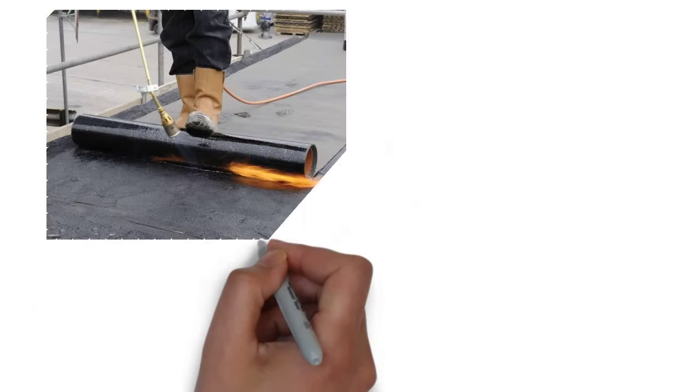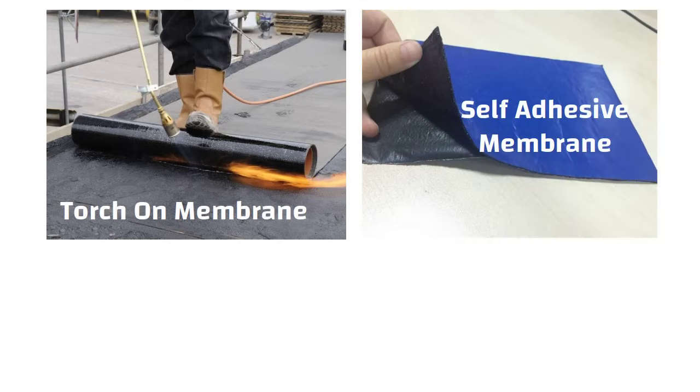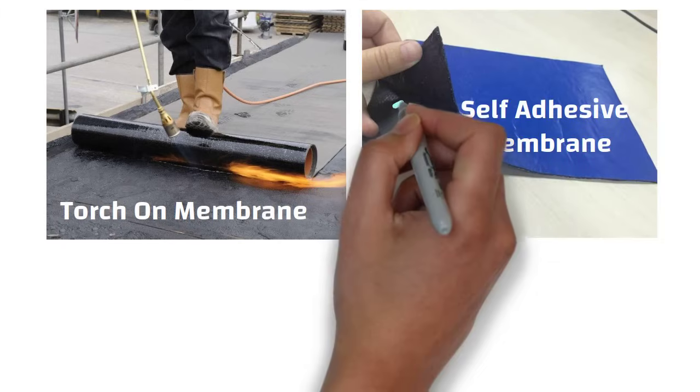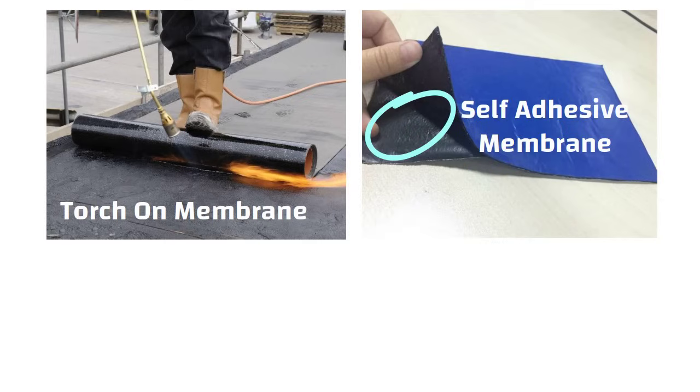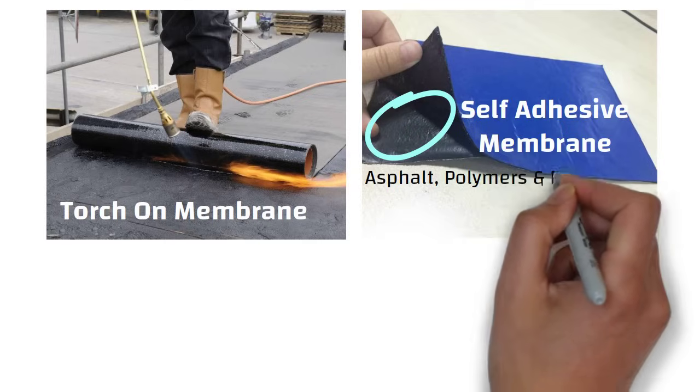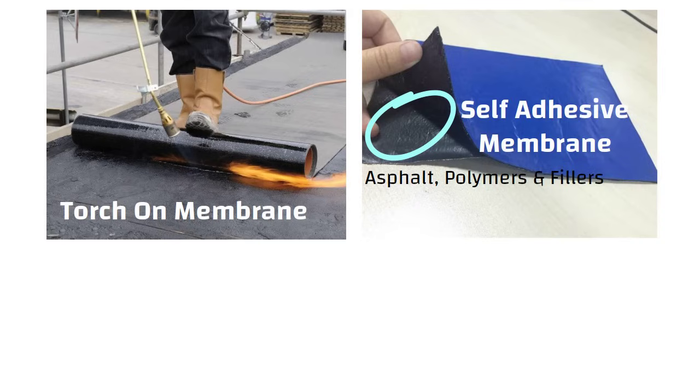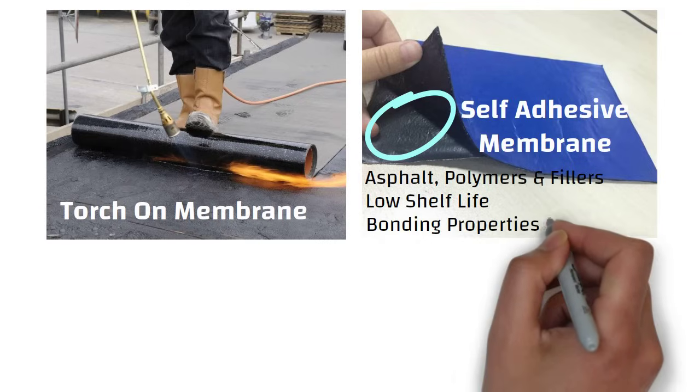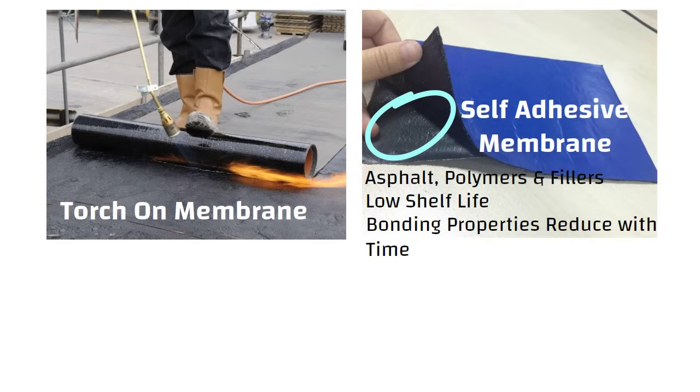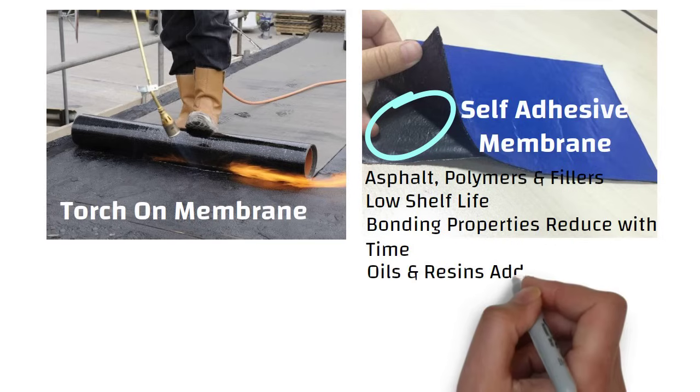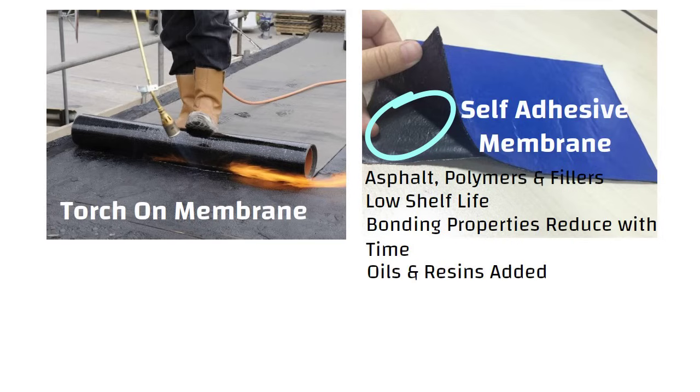The bituminous membrane has a torch on the membrane and self-adhesive membrane. Self-adhesive compounds comprise asphalt, polymers and filler. The self-adhesive type has a low shelf life as bonding properties of the membrane reduces with time. Hence, certain resins and oils are added to improve adhesion characteristics. Torch on membrane uses a fire touch to melt the bituminous layer on the member for bonding.